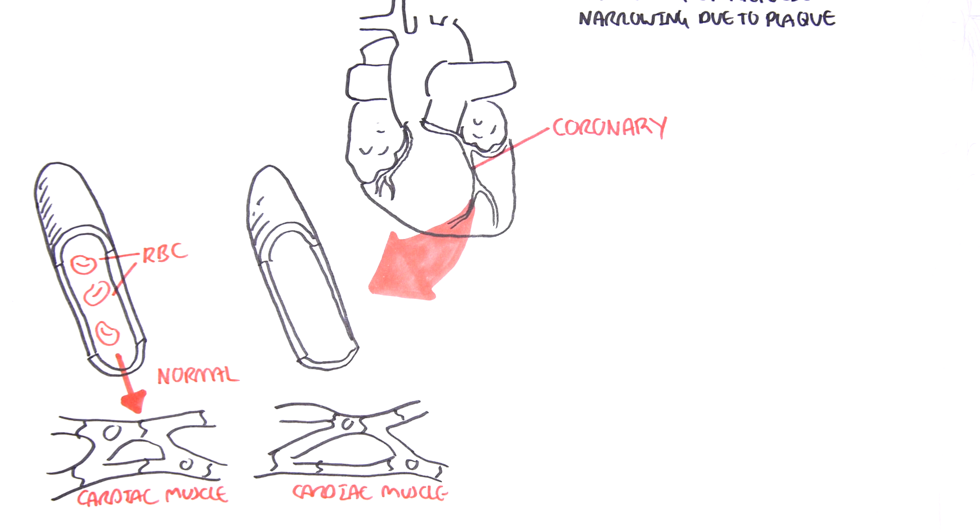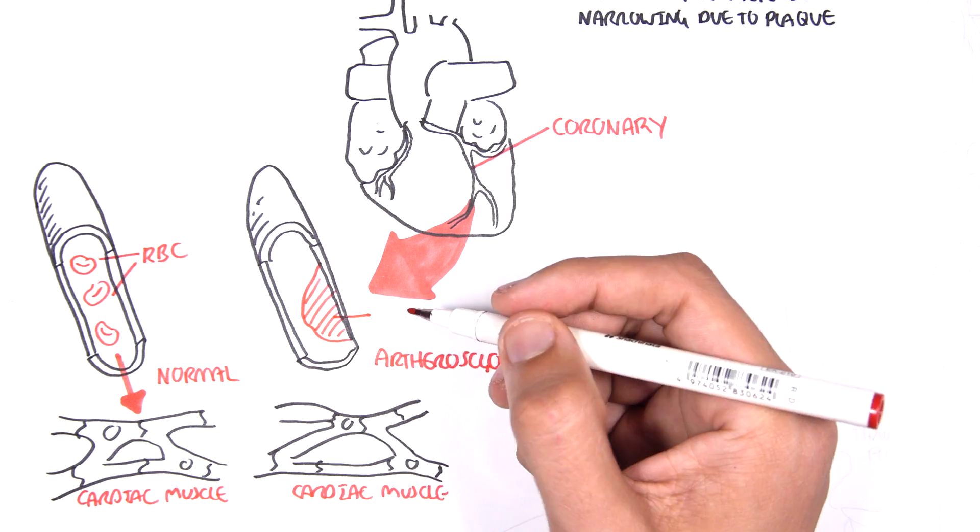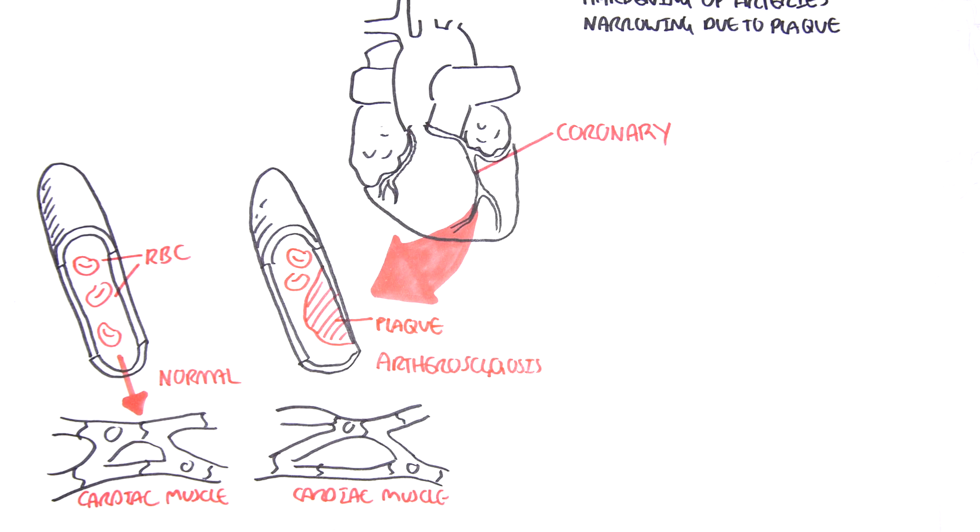However, if we look at an atherosclerosis scenario, there is a plaque formation. Blood can't be delivered properly to the heart or there is reduced blood flow to the heart. And as a consequence, the cardiac muscle cells are deprived of oxygen.